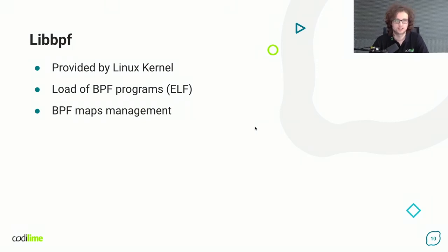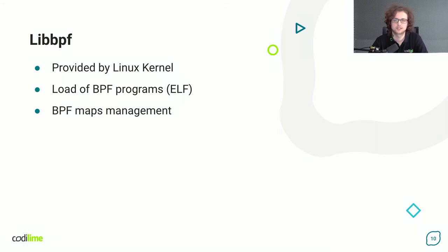The Linux kernel ships with a library called libbpf, which provides support for loading, unloading, and map management in user space for BPF programs. It's shipped in the tools directory of Linux kernel sources, but there is also a GitHub repo for convenience. Usually these days most modern Linux distributions have libbpf already in their package managers. libbpf also manages maps and BPF programs and loads compiled programs to the kernel.